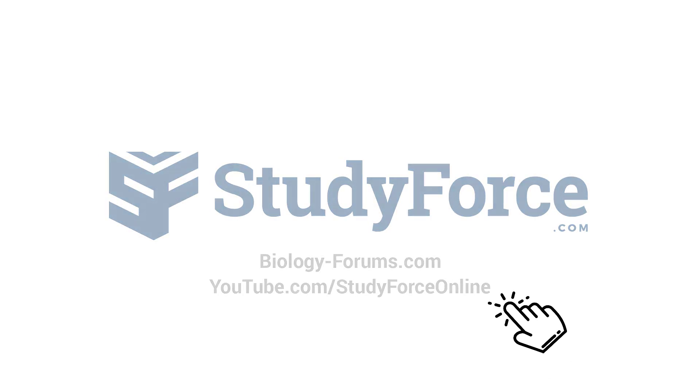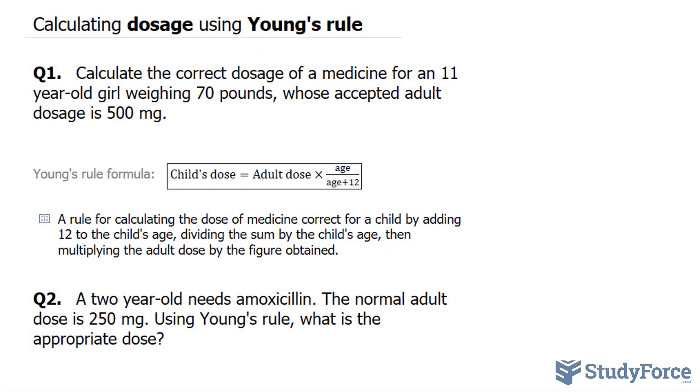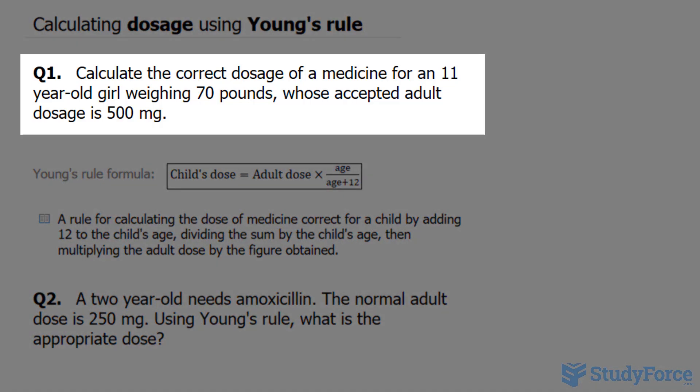In this quick lesson, I'll show you how to calculate dosage using Young's Rule. Question 1 reads: calculate the correct dosage of a medicine for an 11-year-old girl weighing 70 pounds, whose accepted adult dosage is 500 milligrams.